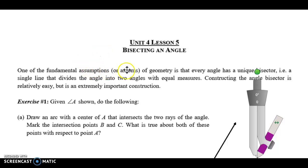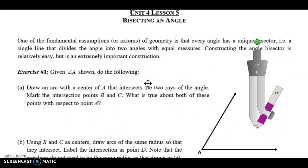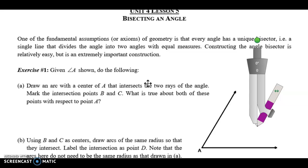One of the fundamental assumptions or axioms of geometry is that every angle has a unique bisector. To bisect an angle means to cut it in half, so there's only one line that will cut an angle in half. A single line divides an angle into two angles with equal measure. Constructing the angle bisector is relatively easy, but it is an important concept.